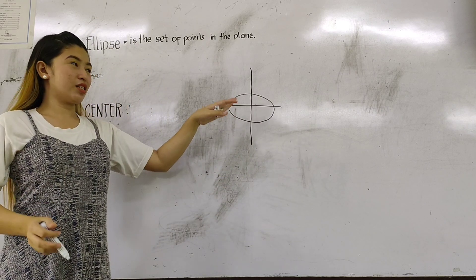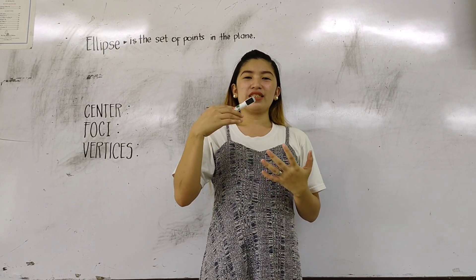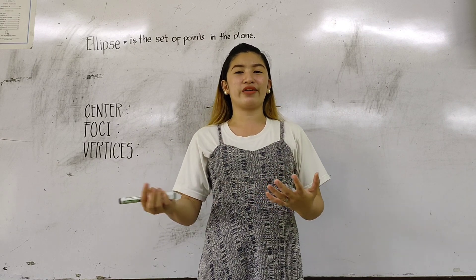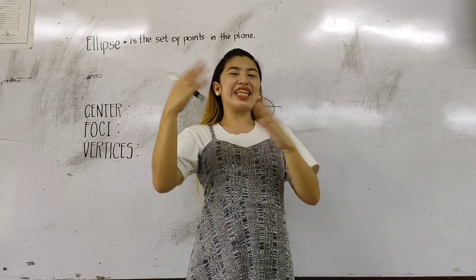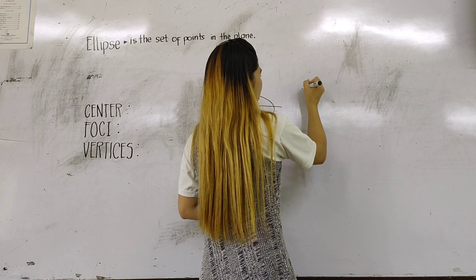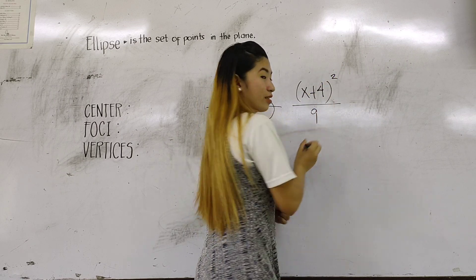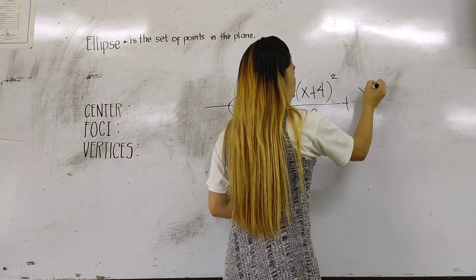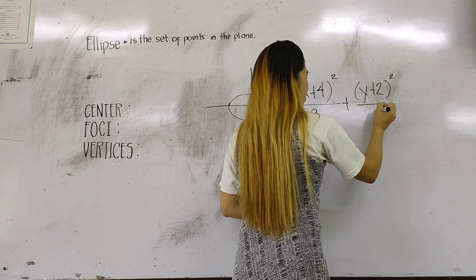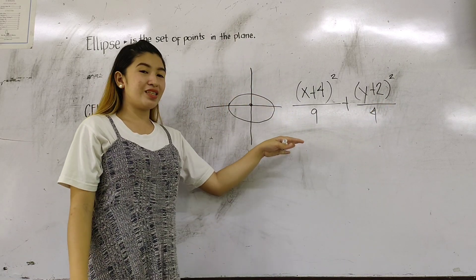Our ellipse has its center at the origin. So we are going to find the given equation from standard form and convert it into general form. Here is an example of an ellipse: (x + 4)² / 9 + (y + 2)² / 4. This form of the ellipse is called the standard form.